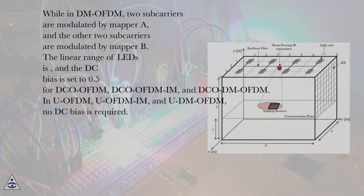While in DM-OFDM, two subcarriers are modulated by mapper A, and the other two subcarriers are modulated by mapper B. The linear range of LEDs is specified, and the DC bias is set to 0.5 for DCO-OFDM, DCO-OFDM-IM, and DCO-DM-OFDM.